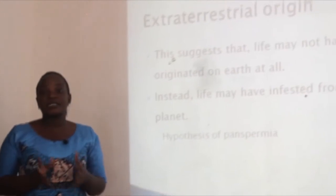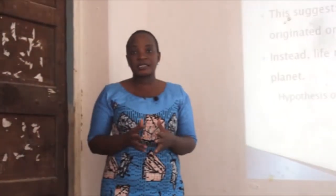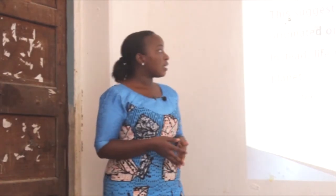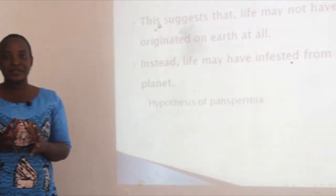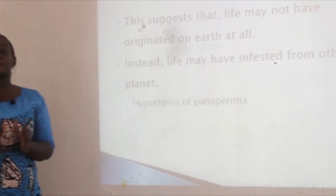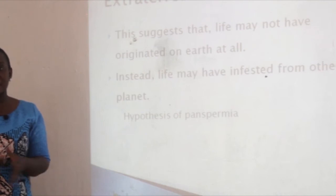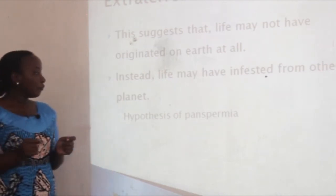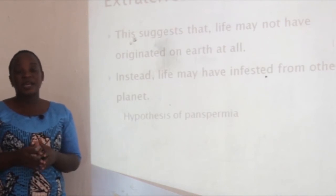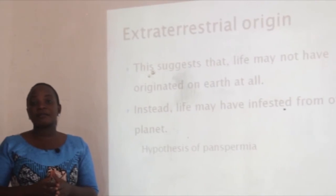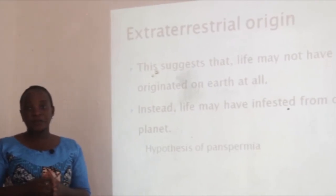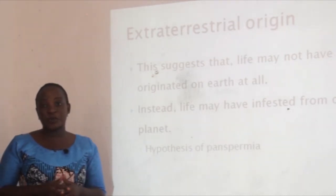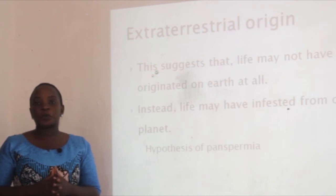The second theory is extraterrestrial origin. This theory suggests that life may not have originated on earth at all — instead, it may have reached the earth from other planets. According to the hypothesis of panspermia theory, cosmic dust may have carried life forms to earth, perhaps as an infestation from distant stars.